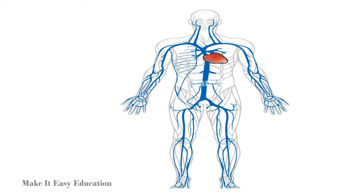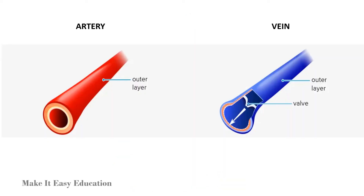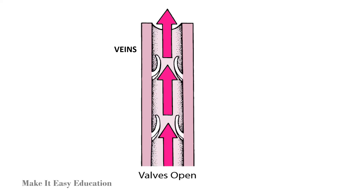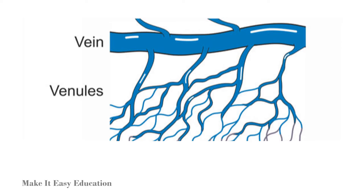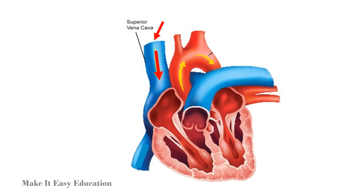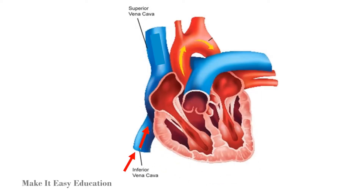Veins are thinner than arteries and carry blood from different parts of the body back to the heart. Veins can carry more blood than arteries, and they contain special structures called valves that prevent blood traveling toward the heart from flowing back to the body parts. Veins get divided into smaller venules to form a network throughout the body. An important vein is the superior vena cava, which brings blood from the upper portion of the body to the heart.